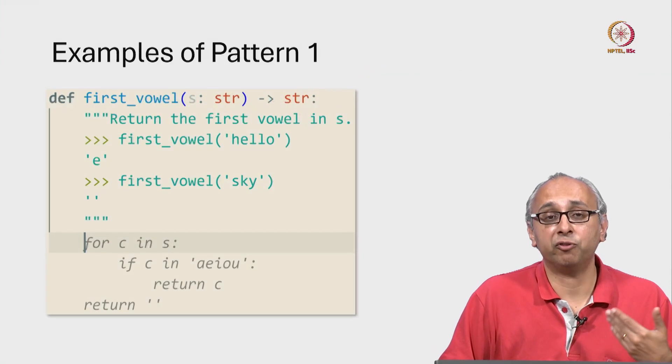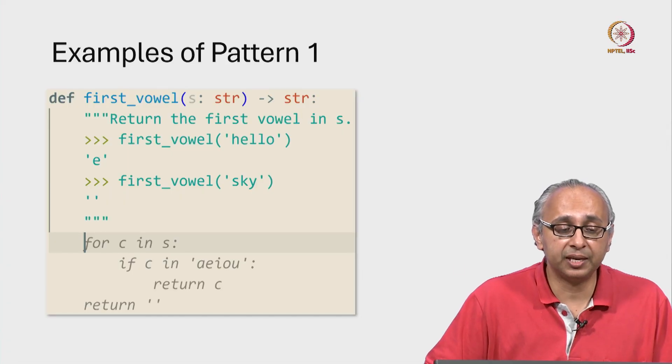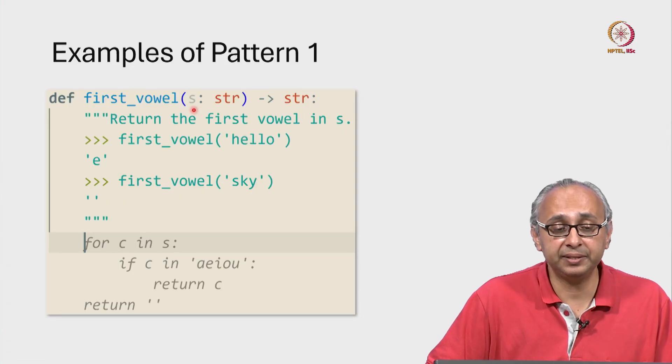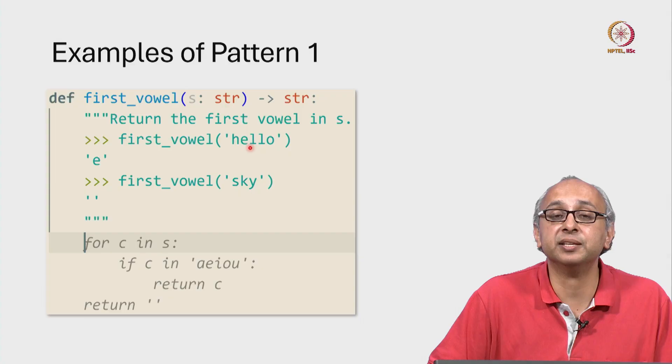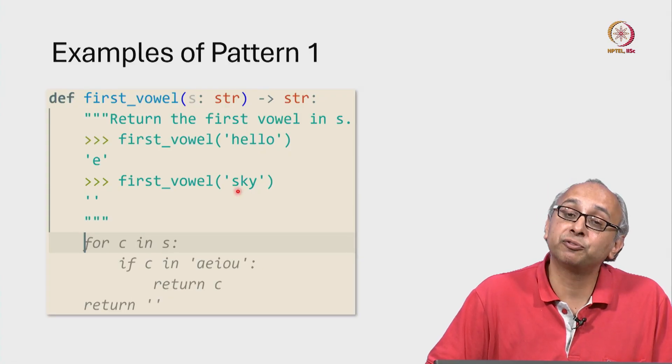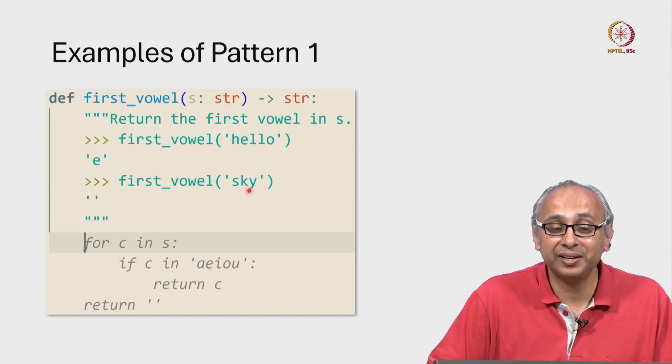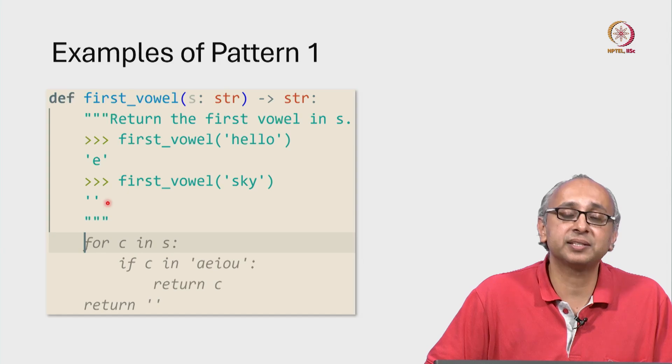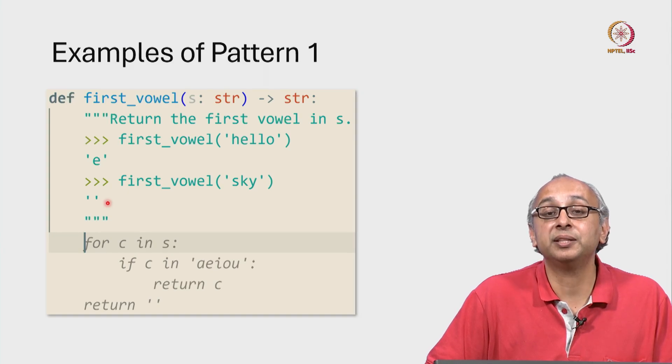Here is another example of pattern 1. In this case, we are given a string s and we're supposed to find the first vowel in s. As an example, in the string hello, the first vowel is e. And what if the string has no vowels? Well, in that case, let us say we want to return the empty string.